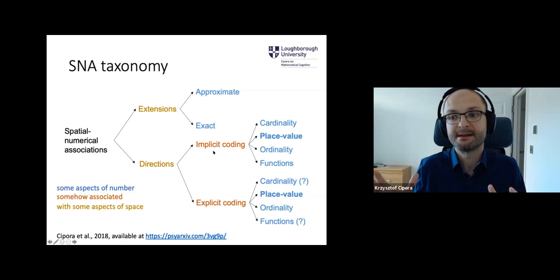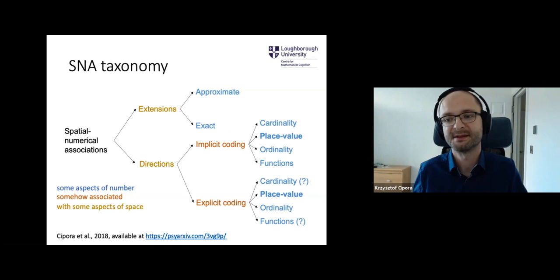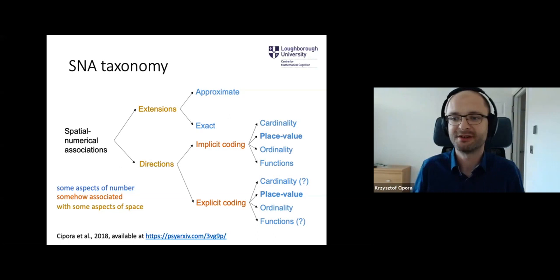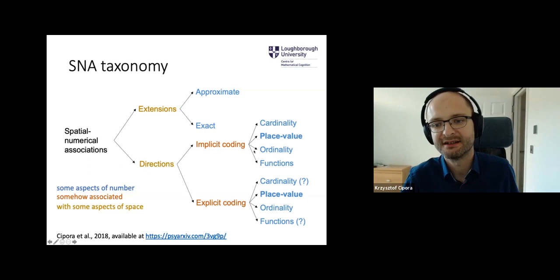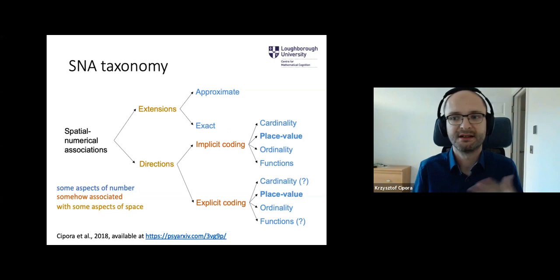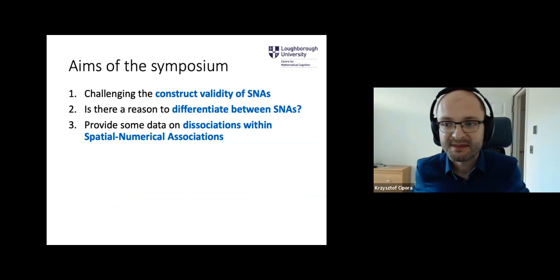Implicit means we observe it by looking at patterns of reaction times or errors that participants make, and we don't explicitly ask them to tell whether the number is on the left or right or up or down — for instance, the SNARK effect or special biases in mental arithmetic. In explicit coding, we really ask participants to somehow organize the numbers in space, and they do it in a kind of systematic way.